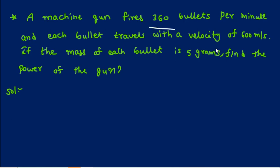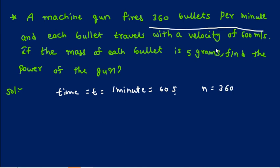A machine gun fires 360 bullets per minute. First, let's convert time to seconds: time equals 1 minute equals 60 seconds. Number of bullets n equals 360 bullets.